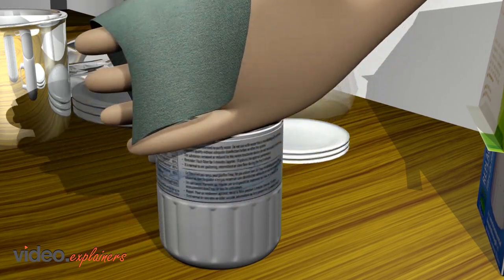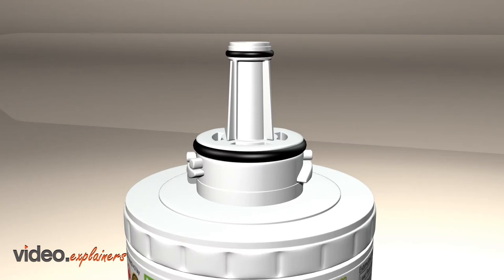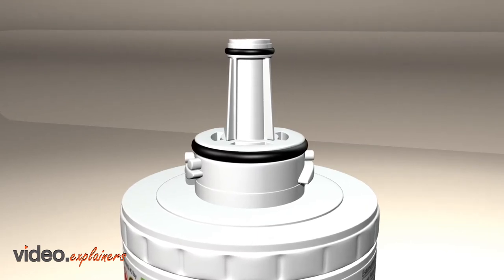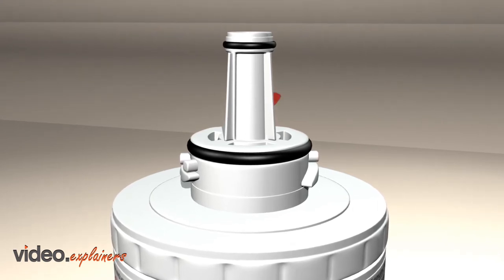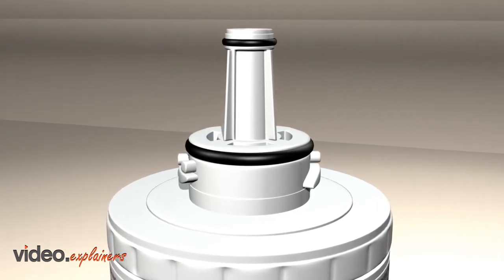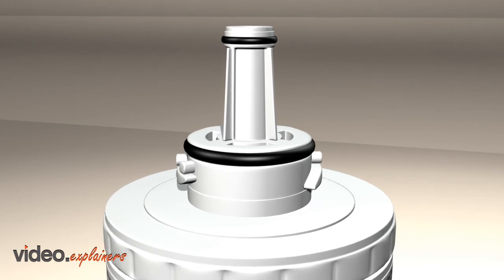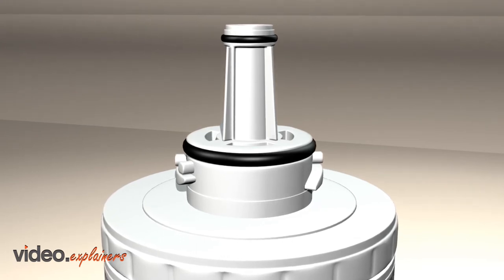Simply wipe off the particles. We apply an NSF approved food grade silicone to lubricate our filter connections. Do not wipe off the silicone. If you have wiped off the silicone, you can lubricate it yourself with vegetable oil or petroleum jelly.